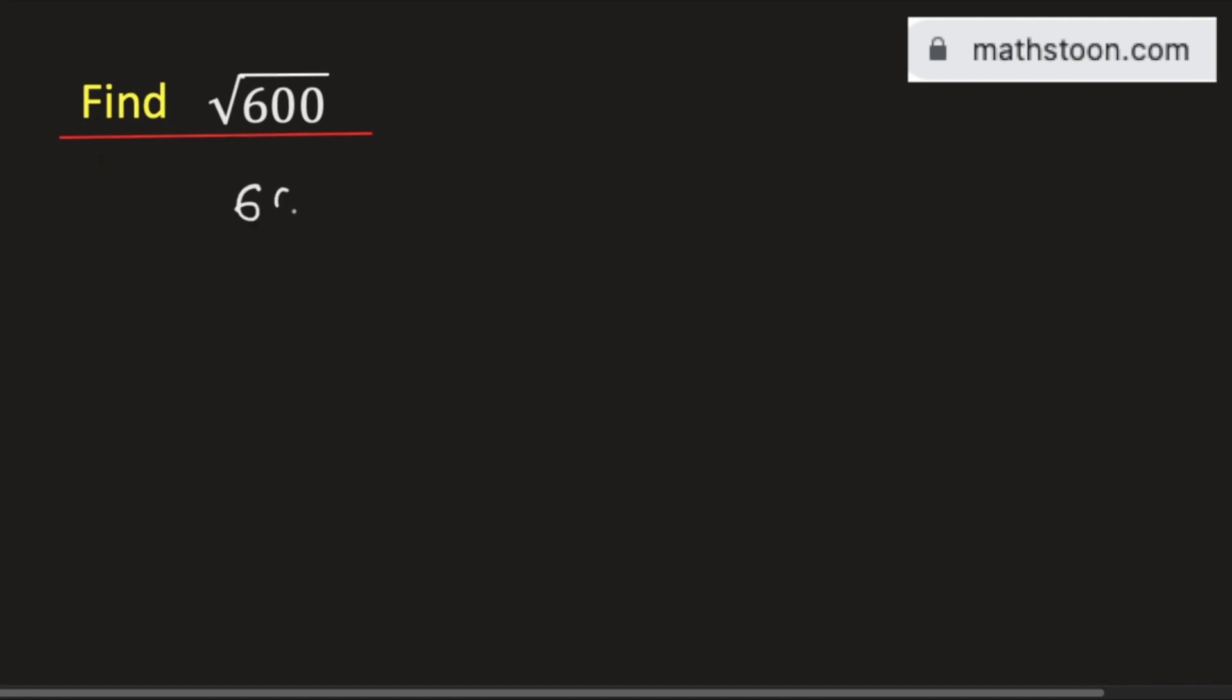In this video we will simplify square root of 600. At first we will write 600 as the product of two numbers, at least one of them will be a perfect square.